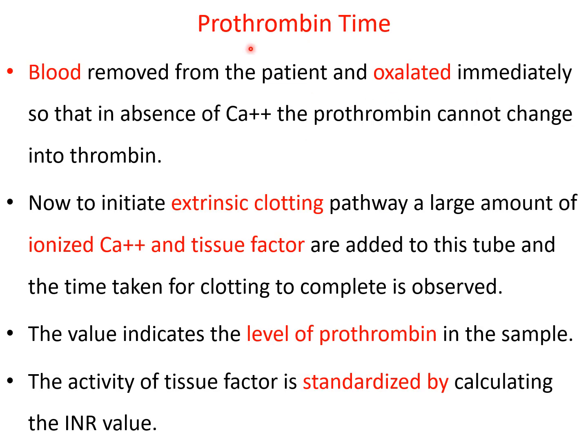Now comes the prothrombin time. When blood is removed from the patient, it is oxalated immediately so that, in the absence of calcium, prothrombin cannot change into thrombin. To initiate the extrinsic clotting pathway, you add a large amount of ionized calcium and tissue factor to this tube and observe when clotting occurs. The level of prothrombin in the sample determines how quickly clotting happens; if prothrombin is reduced, clotting is delayed.